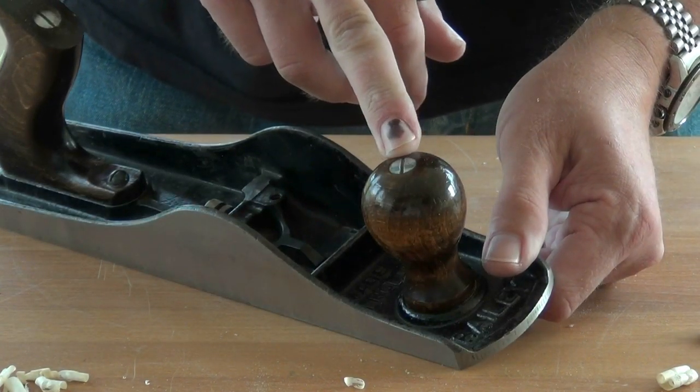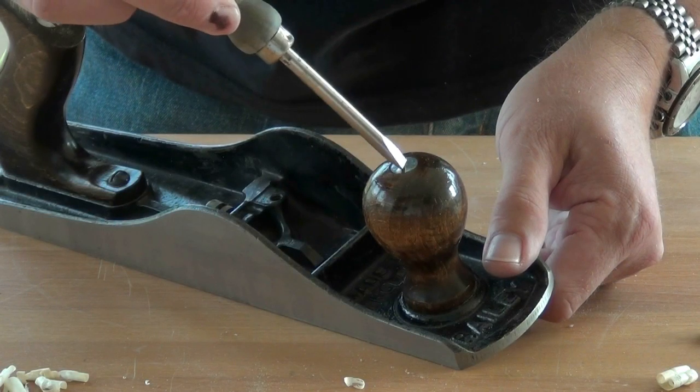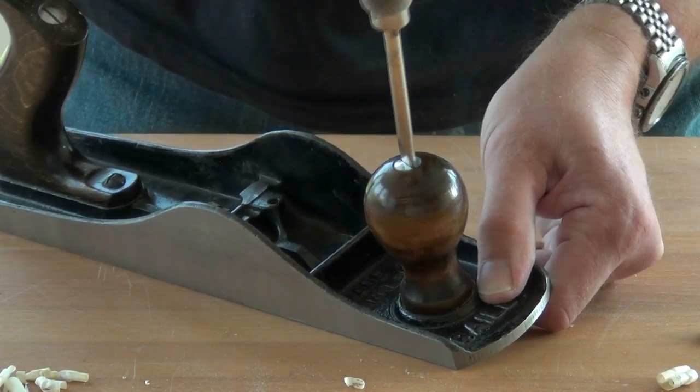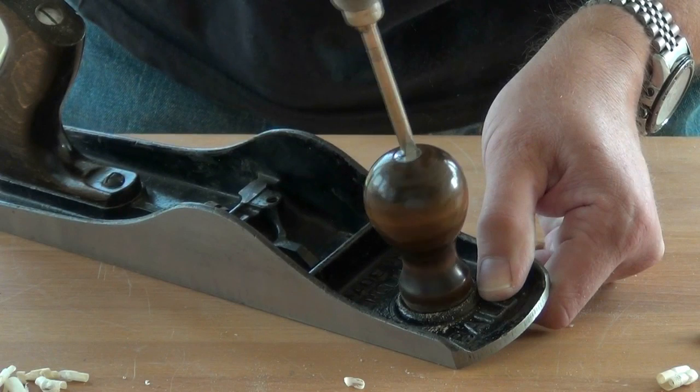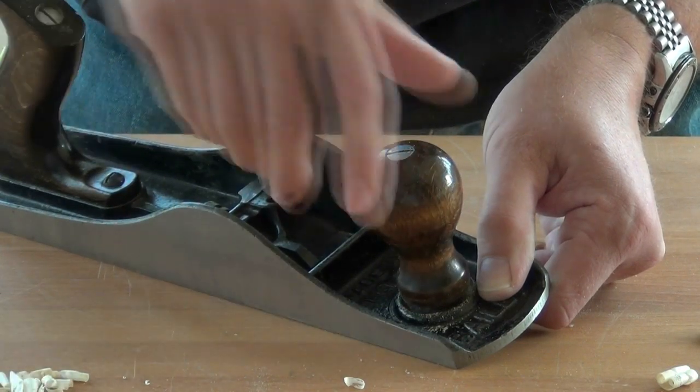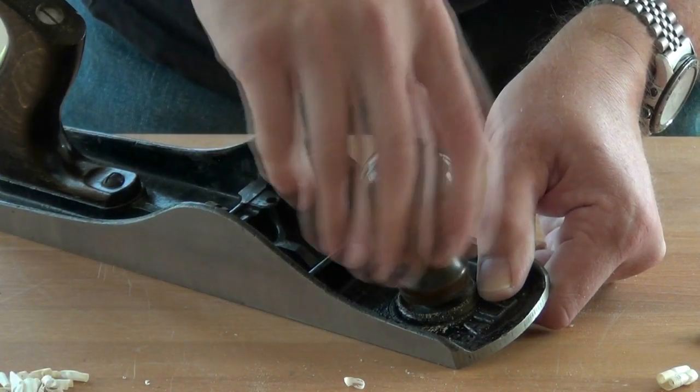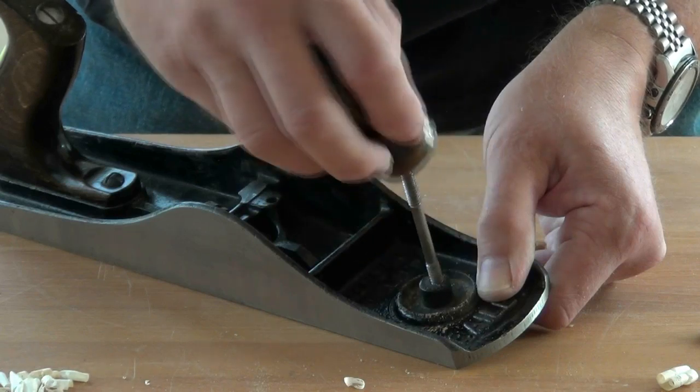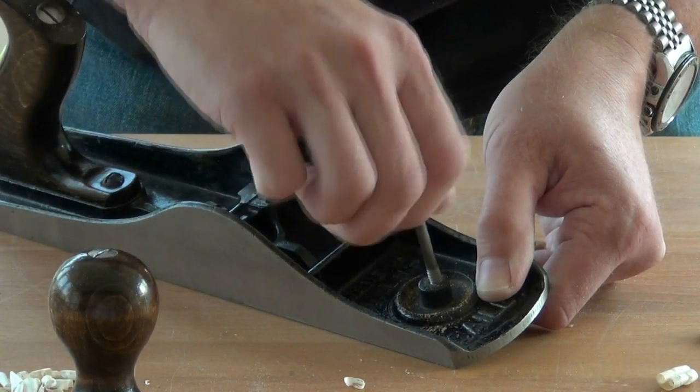The front handle or knob can be removed by undoing the screw through the top. These sometimes crack and it's nice to be able to replace them.